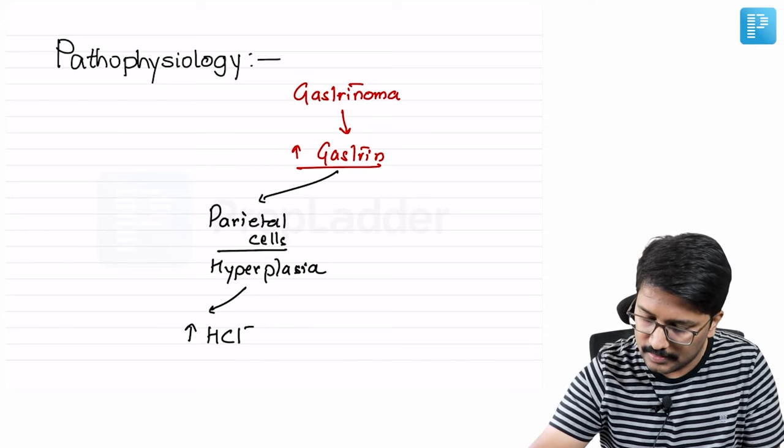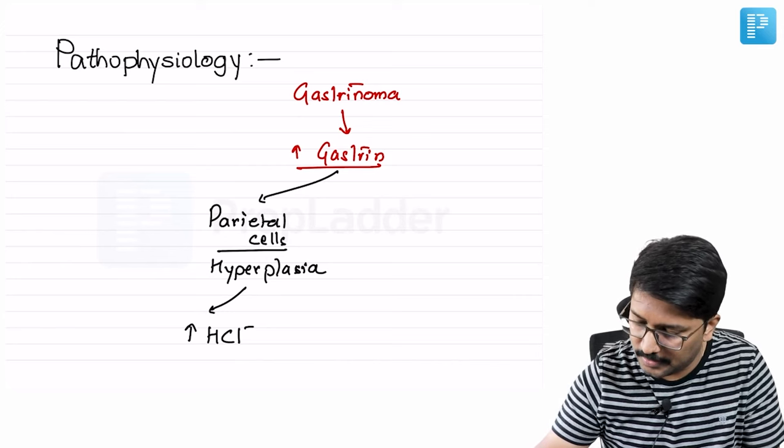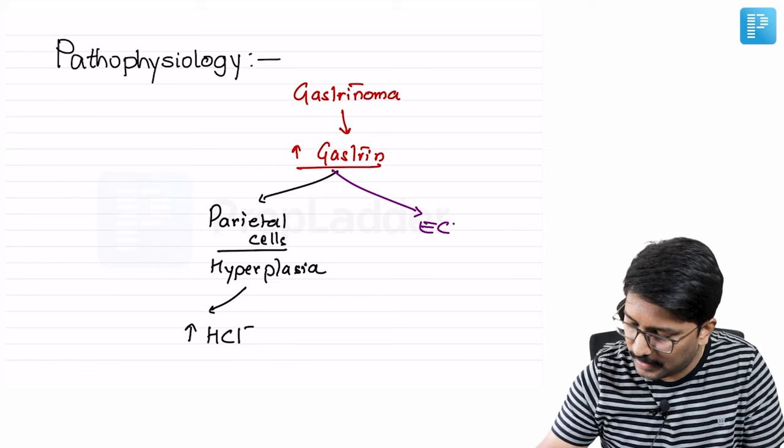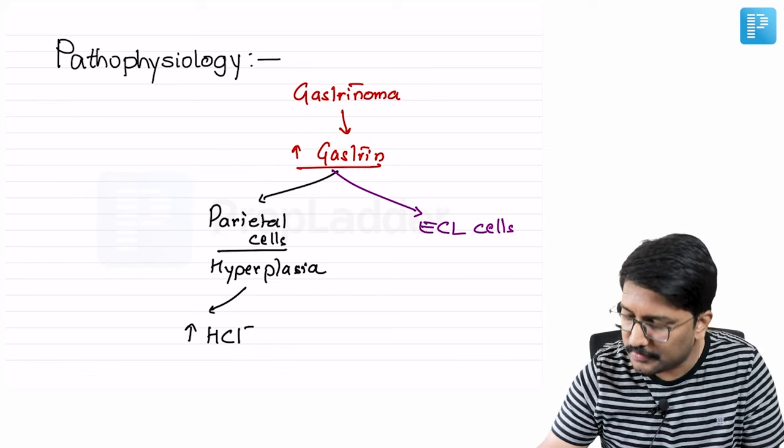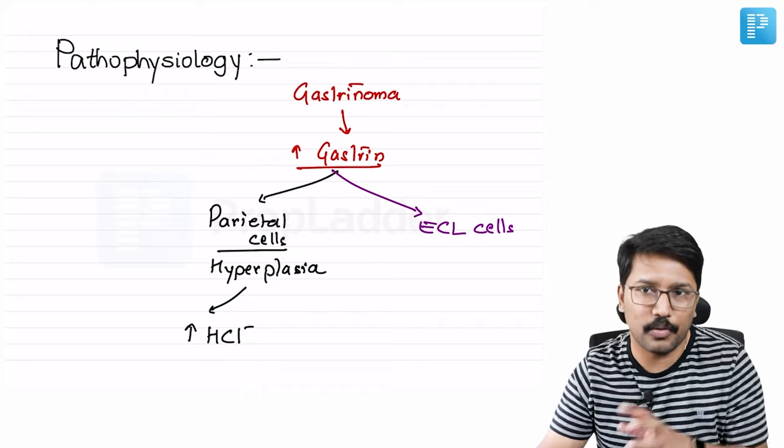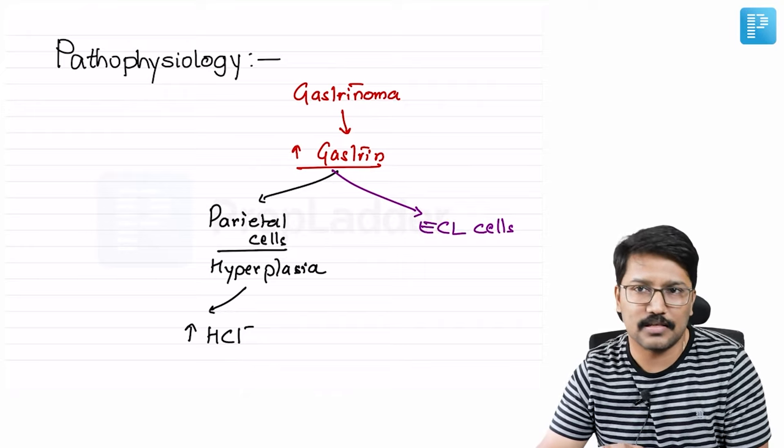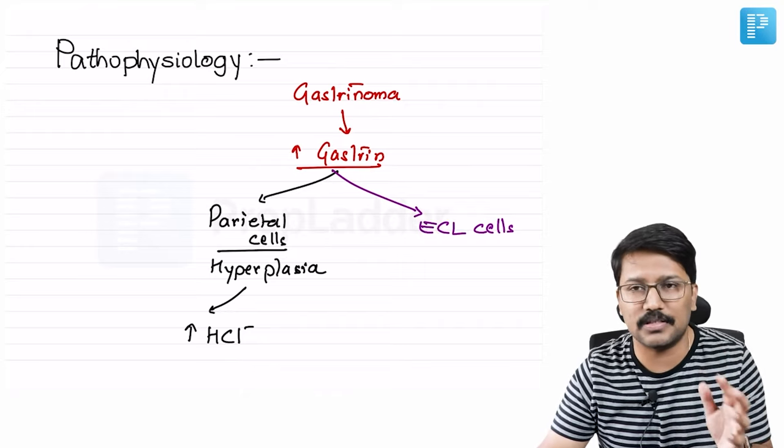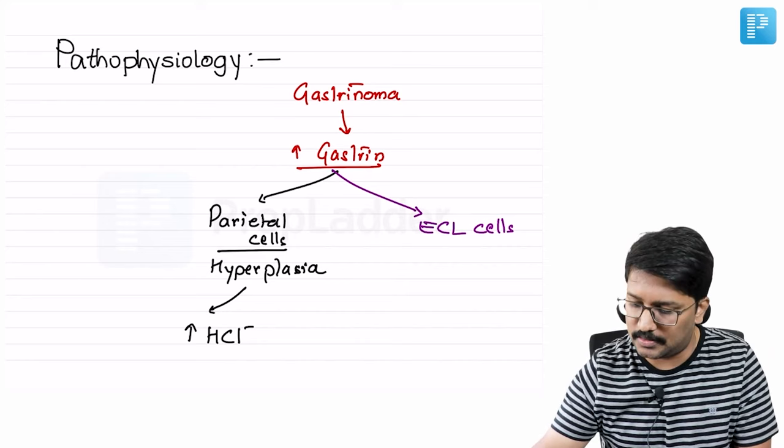On the other hand, gastrin can also stimulate enterochromaffin-like cells. If you remember from the basic videos, enterochromaffin-like cells primarily secrete histamine. You have enterochromaffin cells which secrete atrial natriuretic peptide or some similar peptides.